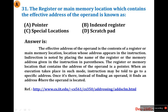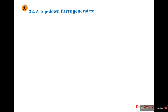When execution takes place in such a mode, the instruction may go to a specific address; once there, instead of finding an operand it finds an address where the operand is located. That's why the register and main memory location which contains the effective address of the operand is known as pointer. So the answer is A.